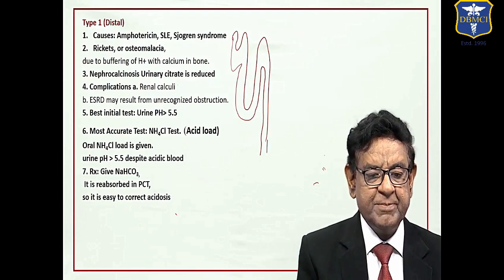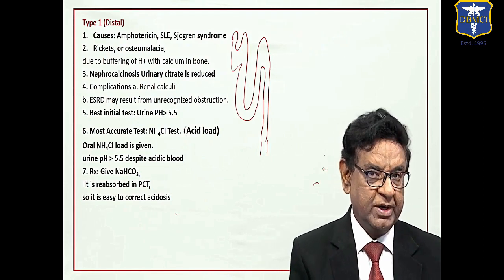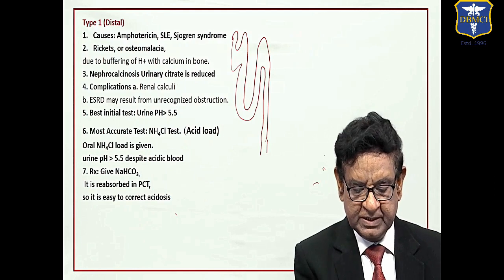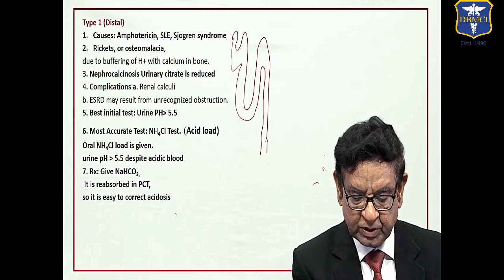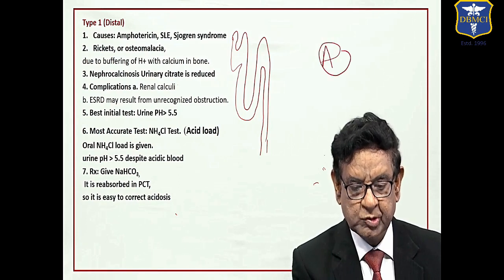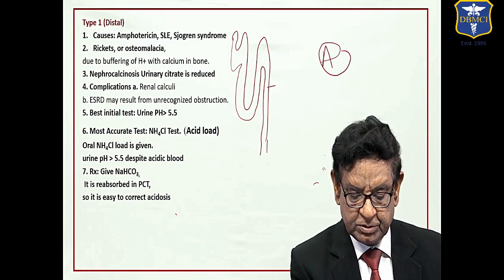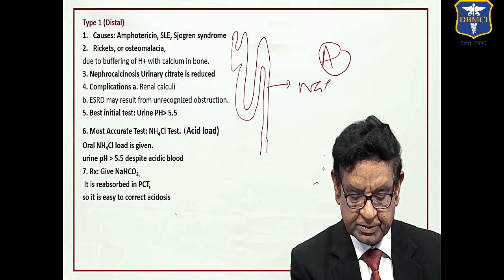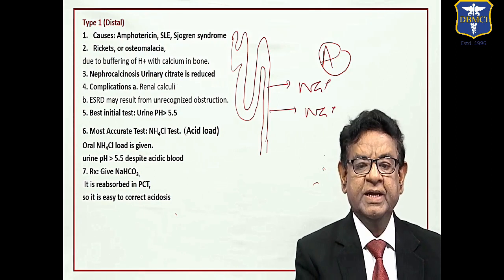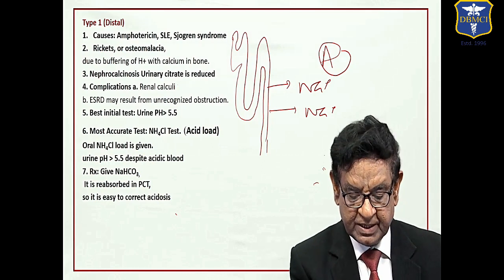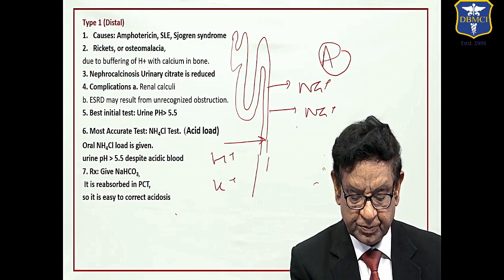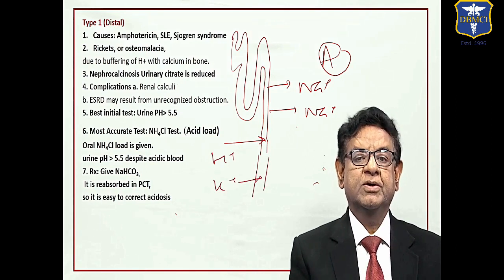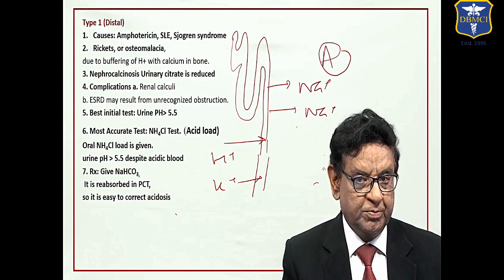Then we have distal type of RTA, so called type 1 RTA also. Site of disease is DCT. Here as usual aldosterone comes and two sodium are reabsorbed. As per law of electrostate, one H ion and one potassium goes out. Two positive in, two positive out.